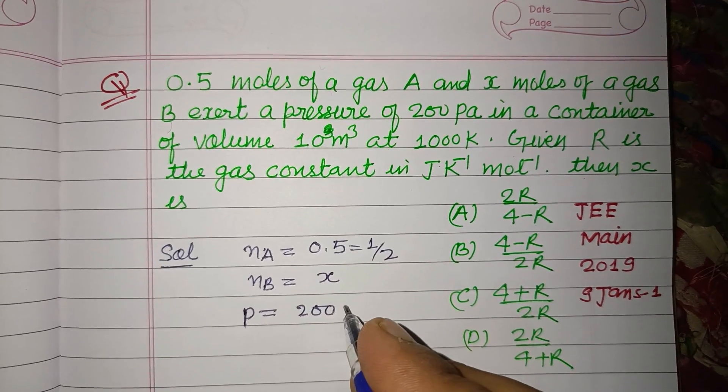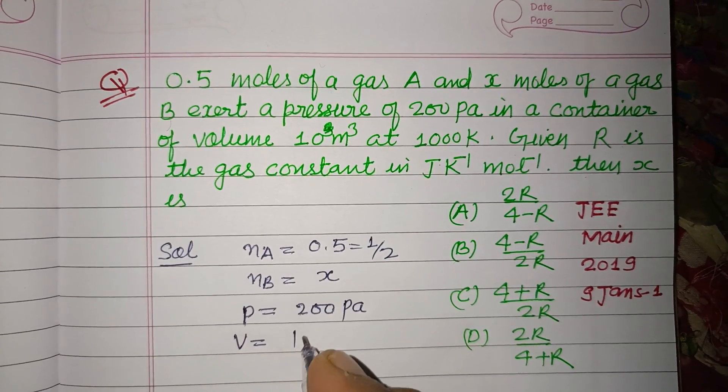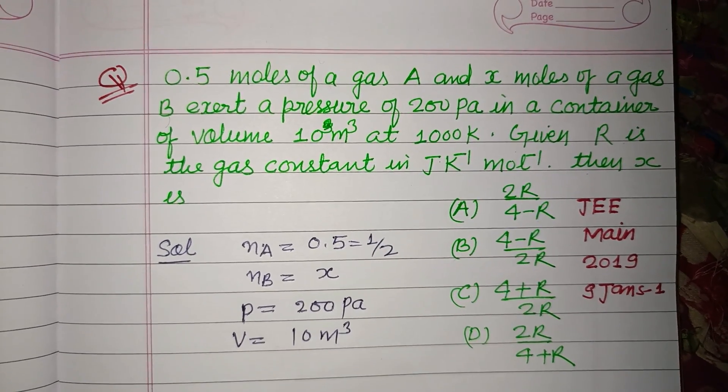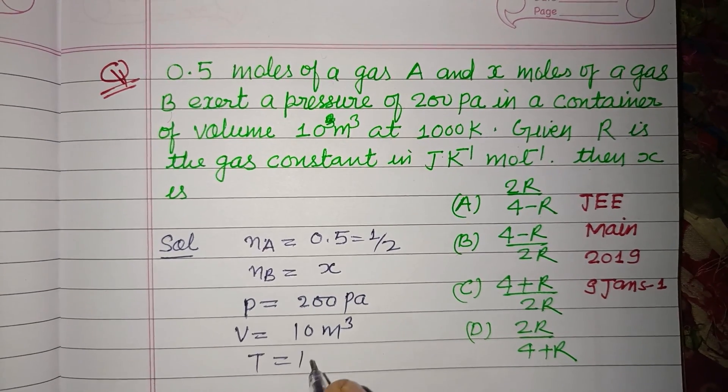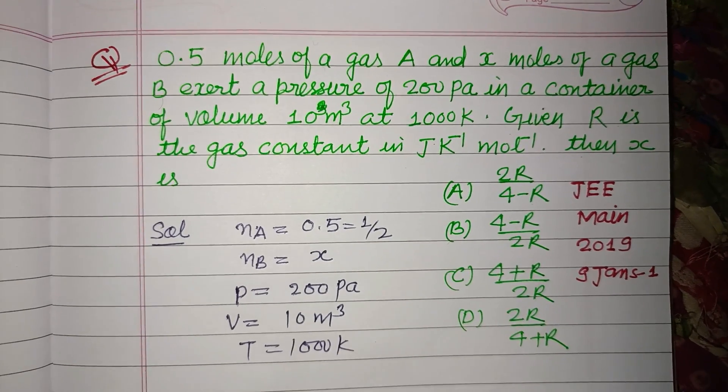and volume of the container is 10 cubic meters and temperature is 1000 Kelvin. Here R is the gas constant.